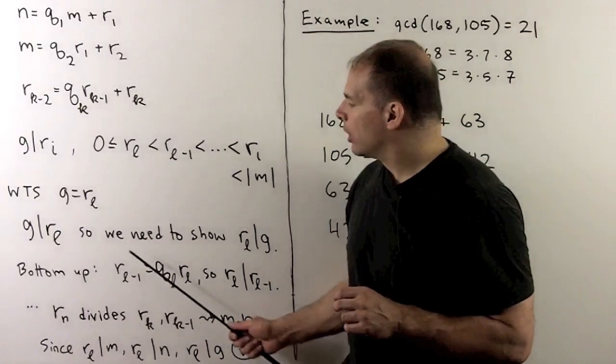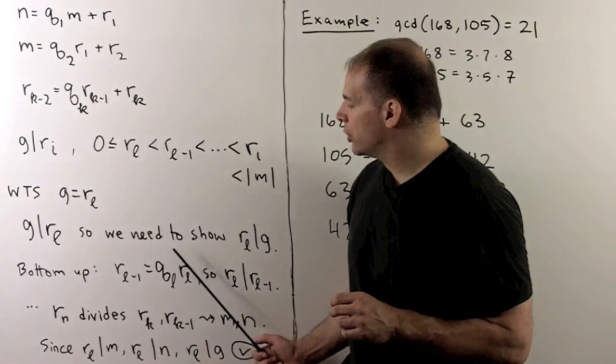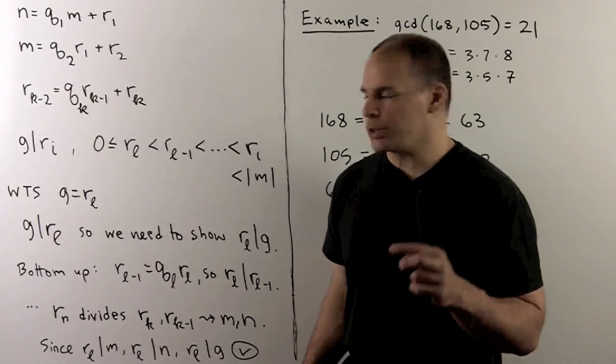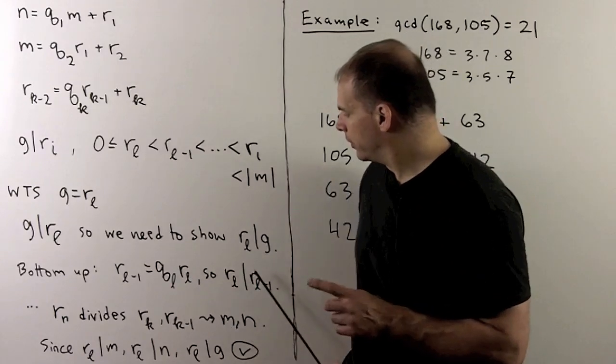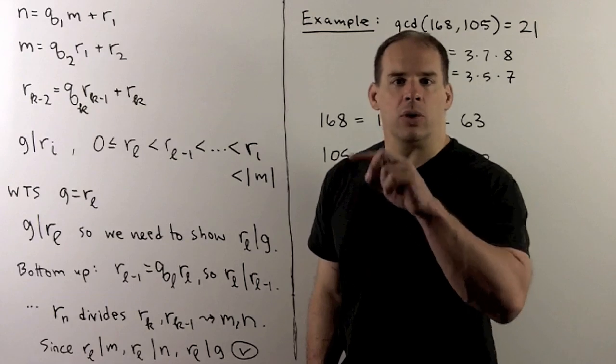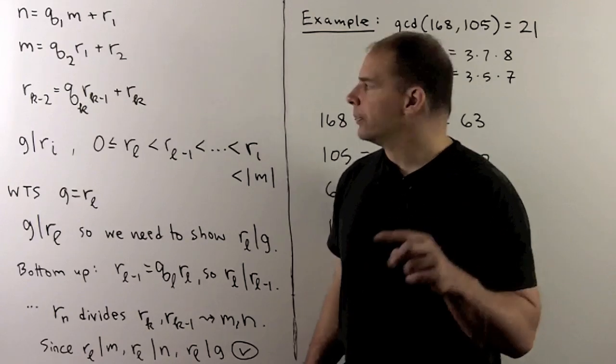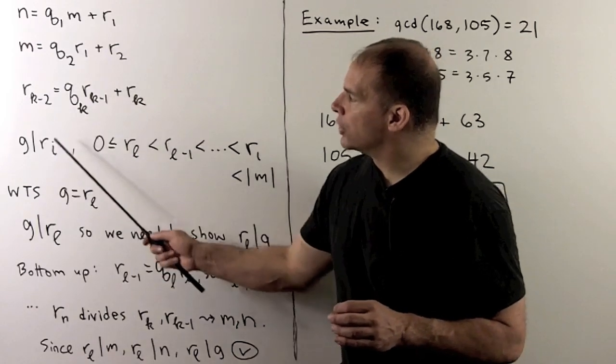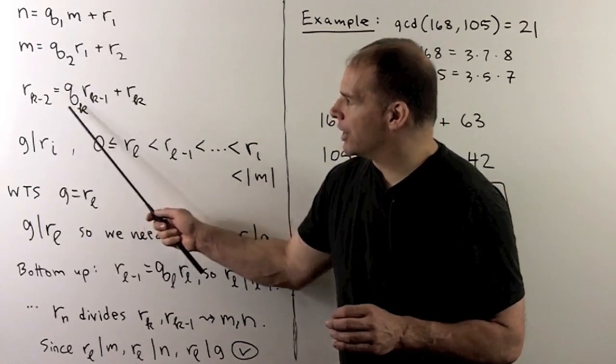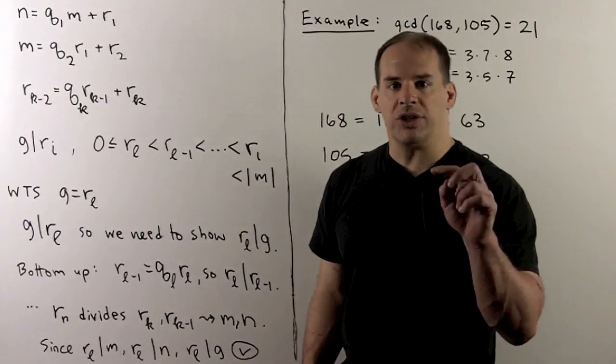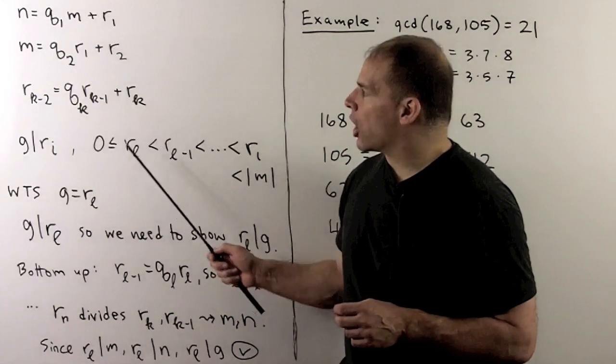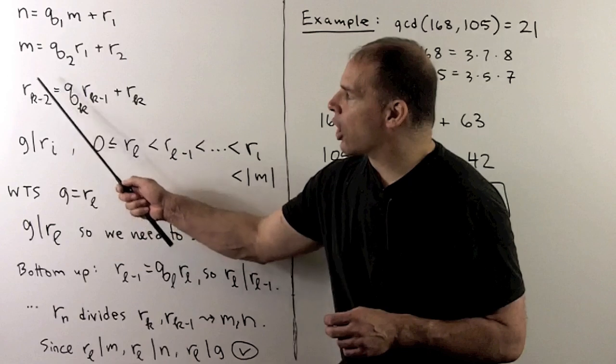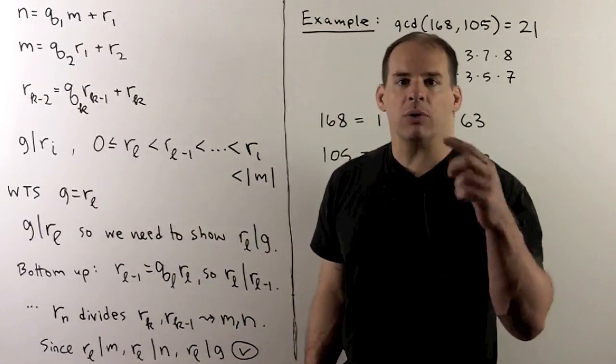The last equation says r sub l minus 1 equals q sub l r sub l. So, that means r sub l divides r sub l minus 1. We go to the equation above the last one. So it'll be in this form. We have that r sub l divides this term and this term. So, it must divide r sub l minus 2. Go to the equation above that one. Because r sub l divides r sub l minus 1 and r sub l minus 2, it'll have to divide r sub l minus 3. And we repeat in that manner.